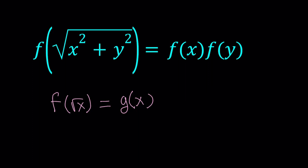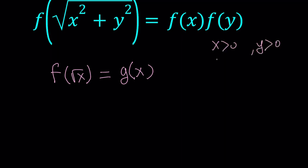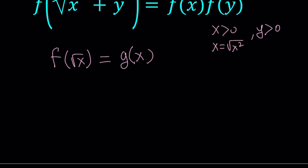By making this substitution, we're going to turn our equation into something more manageable. We're going to be doing a lot of substitutions here. I'm going to replace x with x squared. Since x is positive, x can be written as square root of x squared without the absolute value. That gives us f of x equals g of x squared. This is also good because we completely got rid of the square root symbol.